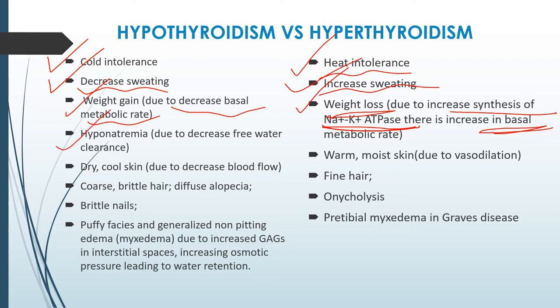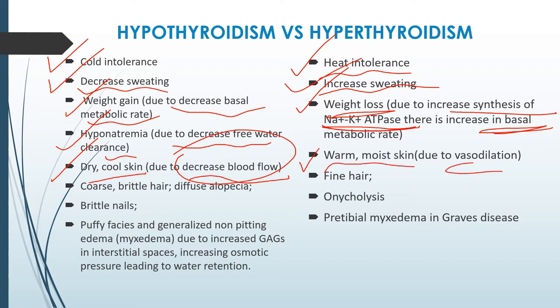We also see hyponatremia in the case of hypothyroidism, due to a decrease in free water clearance. There is dry, cool skin due to decreased blood flow, mainly due to vasoconstriction. In hyperthyroidism, we see warm, moist skin due to vasodilation.